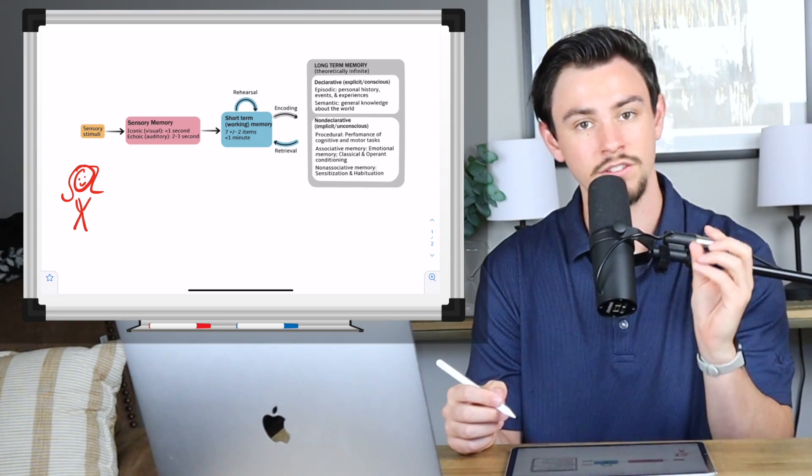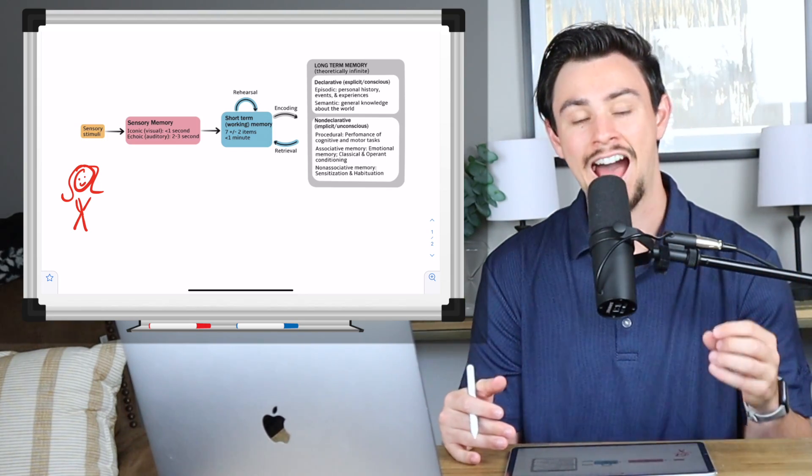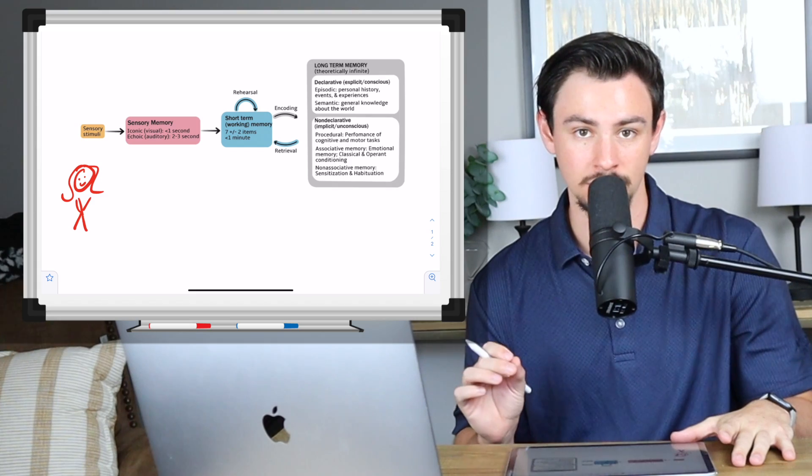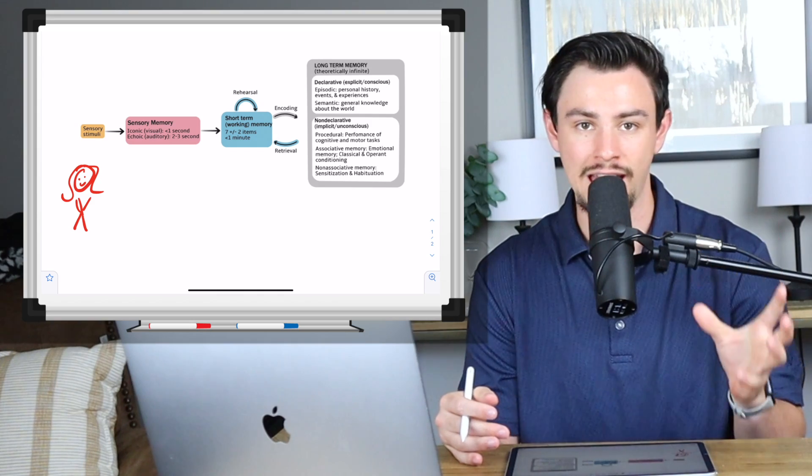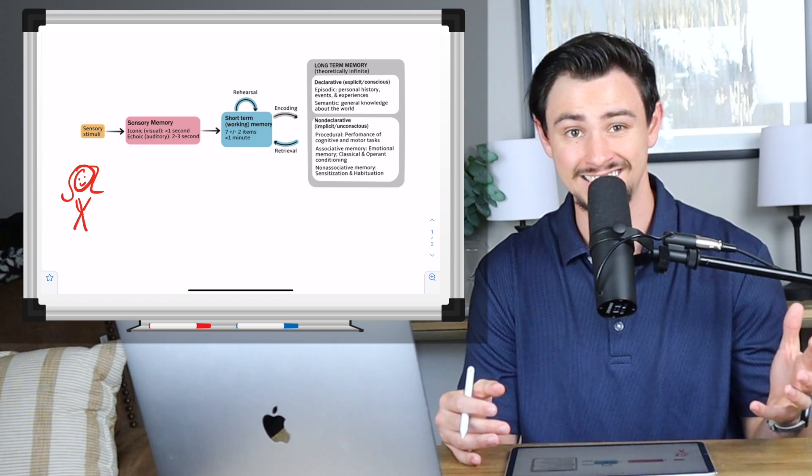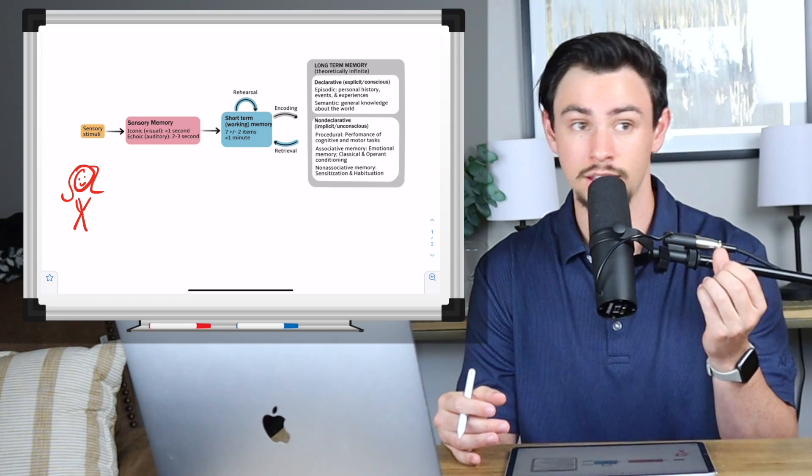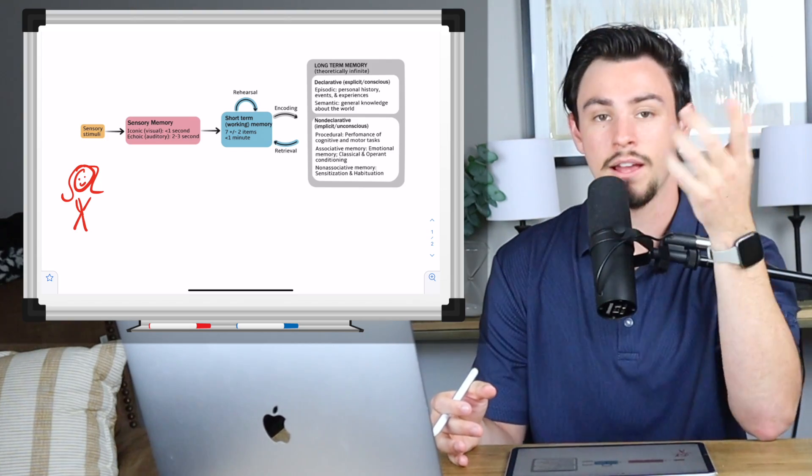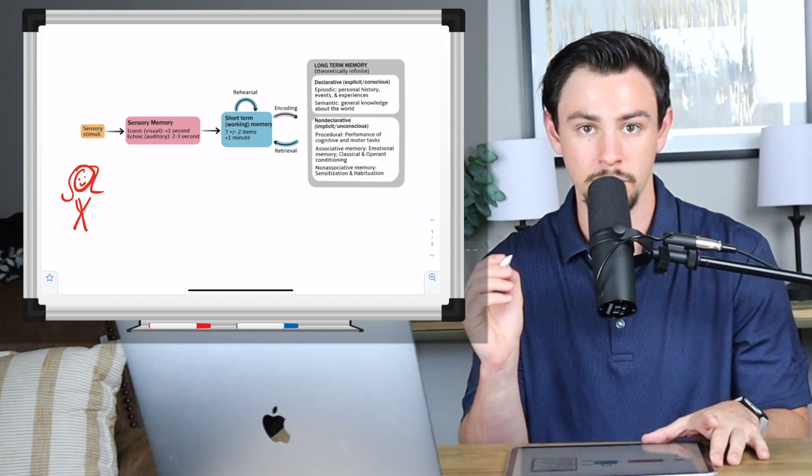So the first type of memory that it gets converted into is something called sensory memory. And that gets split into two types of memory. One of them is iconic and one of them is echoic. Iconic sensory memory is your ability to remember how something looked for less than one second. And it's usually just long enough to react to it. Memory almost seems like a bit of a misnomer here because it's for less than a second, but that's the technical definition. So I always think of it as if you look to your left really quickly, go ahead, do it. Just look to your left really quickly. Now, can you picture what you saw? So for that one second, you could, it was less than one second, you could picture what you saw. That is iconic memory.